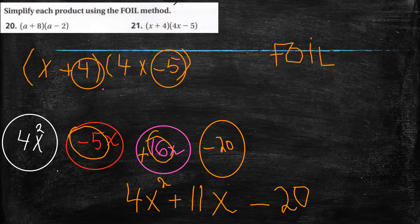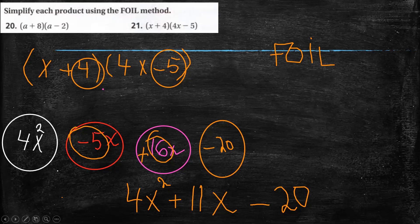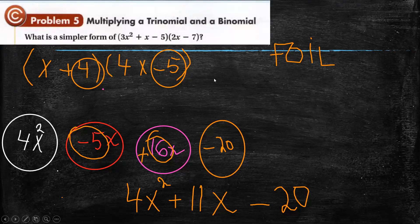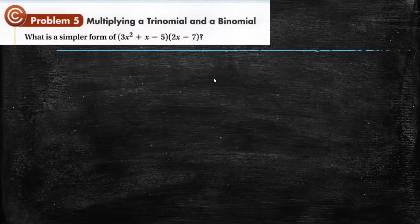This is the FOIL method. If asked to multiply a binomial, you can use the distributive property, the table, or FOIL as you prefer — but if told to use FOIL, you must use only the FOIL method. In the previous lesson we learned how to multiply a monomial with a trinomial and a monomial with a binomial. In this lesson we learned to multiply binomial with binomial, and now we are learning how to multiply a trinomial with a binomial.